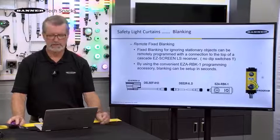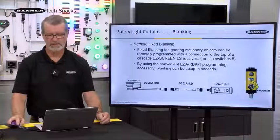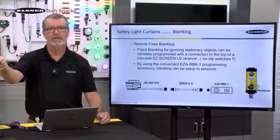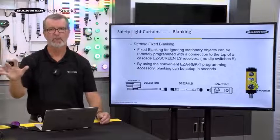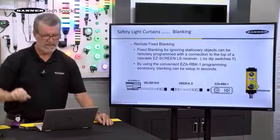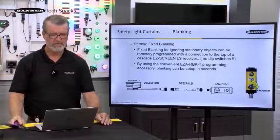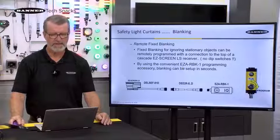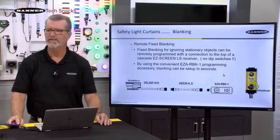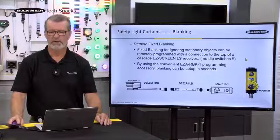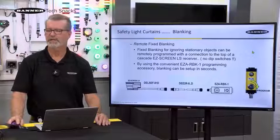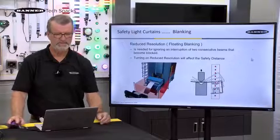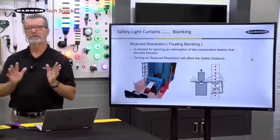Remote fixed blanking is available on some of our light curtains. It uses a small box where you flip a key from 'run' to 'program,' and that's essentially all it takes to program which beams are blocked. You can see the model number for that programming accessory here — it's a very easy way to set up and quickly change the fixed blank area.